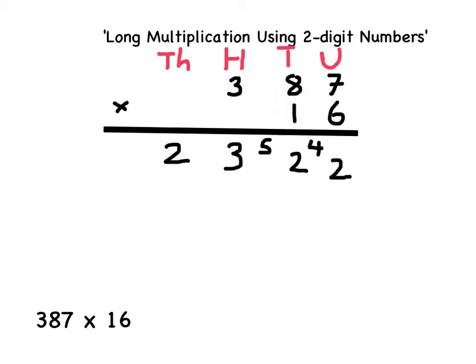Using my place value knowledge, I can straight away work out that 387 multiplied by 10 is 3,870 without needing to do any separate working out. So I'm going to straight away add 3,870 into the next part of my long multiplication.